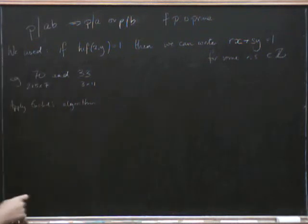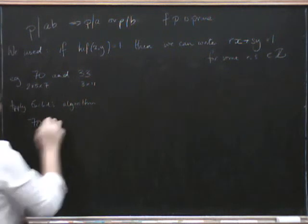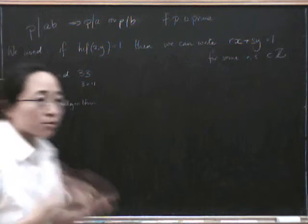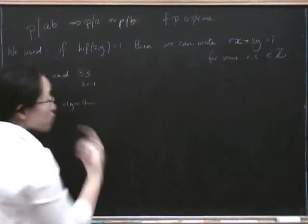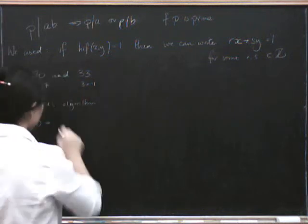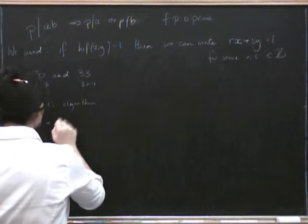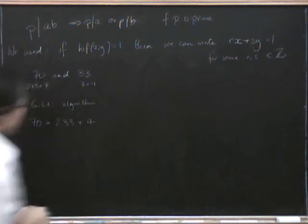Right? Now remember, to do Euclid's algorithm, first we say 70 equals some number of 33s plus a remainder. We keep doing division with remainder. So 33 goes into 70 twice because that's 66, and then we have 4 left over. So that's 2 times 33 with 4 left over.